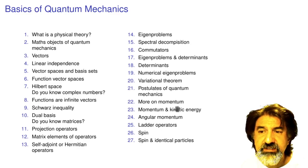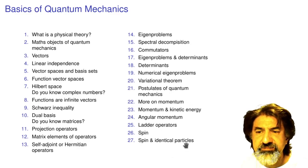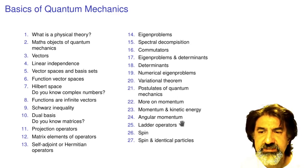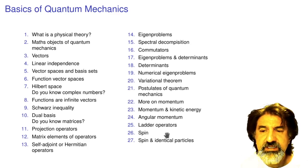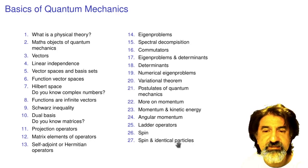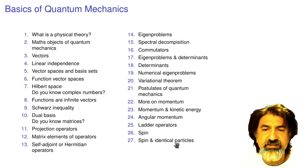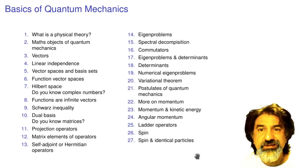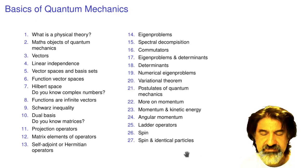After that we talk about momentum, angular momentum, ladder operators, and spin. These are quite important in spectroscopy, and spin is very important for electrons. This part is a little bit advanced for chemistry but we're still going to do it.